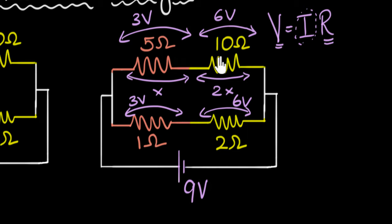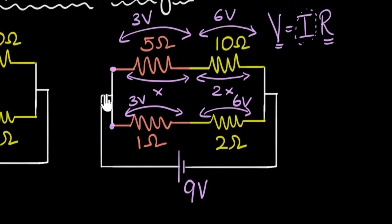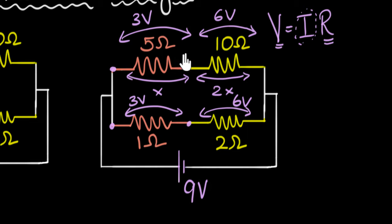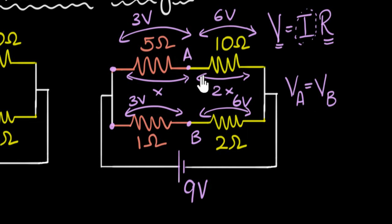Voltages get divided equally because the ratios are the same. Now let's look at the voltages at these two middle points. Whatever is the voltage here, the same is the voltage here — the voltage here and here is exactly the same. If you call the top as nine and the bottom as zero, then going from nine down gives a three volt drop on the left side, and a three volt drop on the right side. Meaning these two middle points must also have the same voltage.